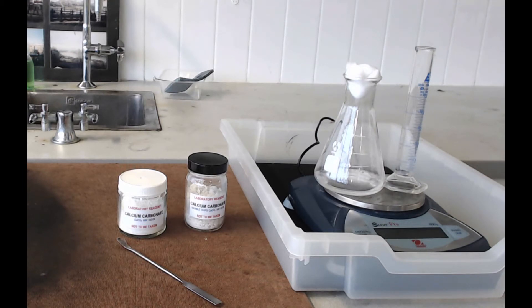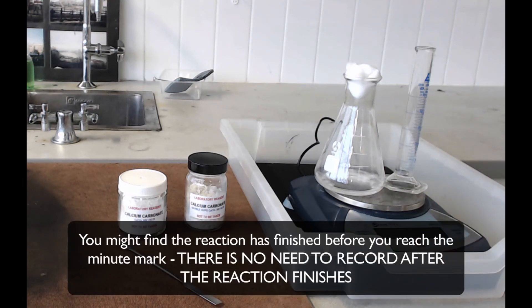All we need to do is just to record how much mass is lost every 10 seconds from this flask up until we reach about a minute. Once you get to a minute, you can take all your equipment off the balance and record your results.